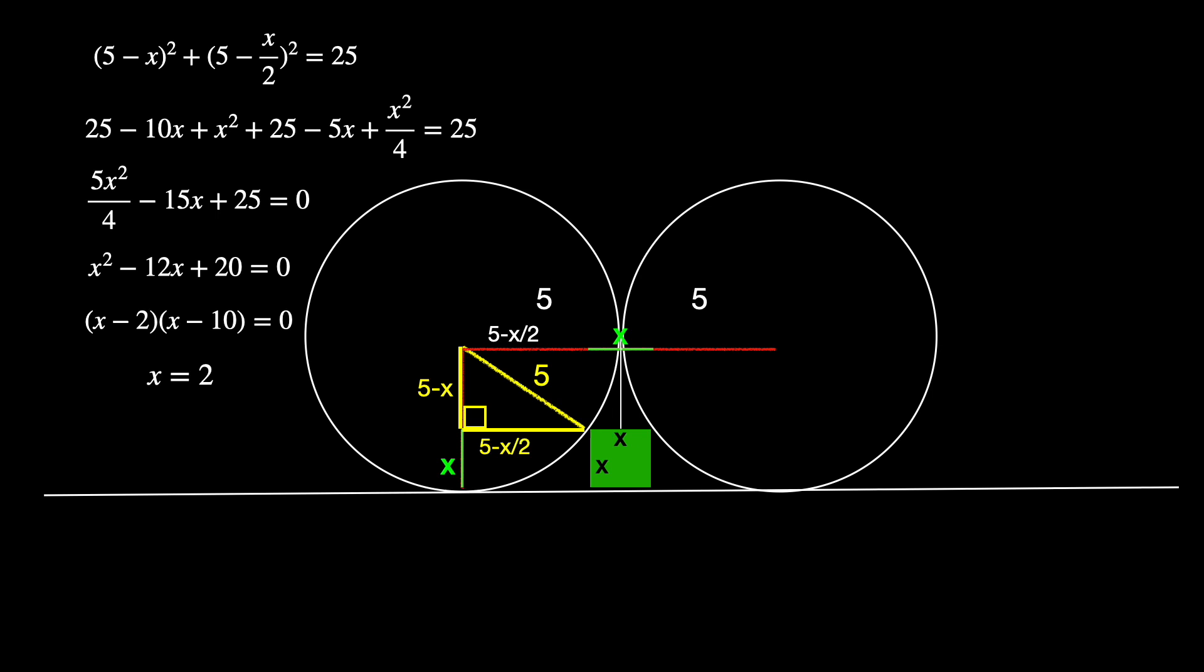So the side of our square must be of length 2, which means the area has to be 2 times 2 or 4. And that's our answer. Thanks for watching.